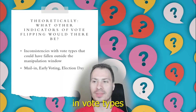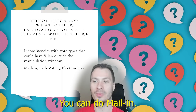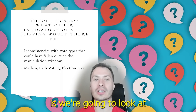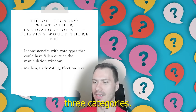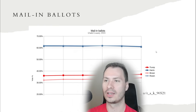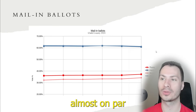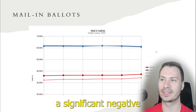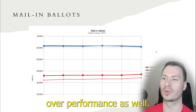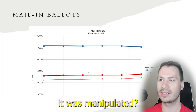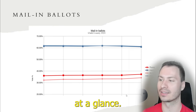We would see inconsistencies in vote types that weren't manipulated. There are three types of voting in the 2024 presidential election: mail-in, early voting, and election day. We're going to look at Clark County specifically, where we have the CVR data showing how people voted across those three categories. When we look at mail-in ballots, we see that Harris, when compared to Senator Rosen, is almost on par with the same amount of votes. She doesn't have a significant negative drop-off vote rate in mail-in ballots in Clark County. If we're assuming negative drop-off votes on average indicate manipulation, then this looks like unmanipulated data at a glance.